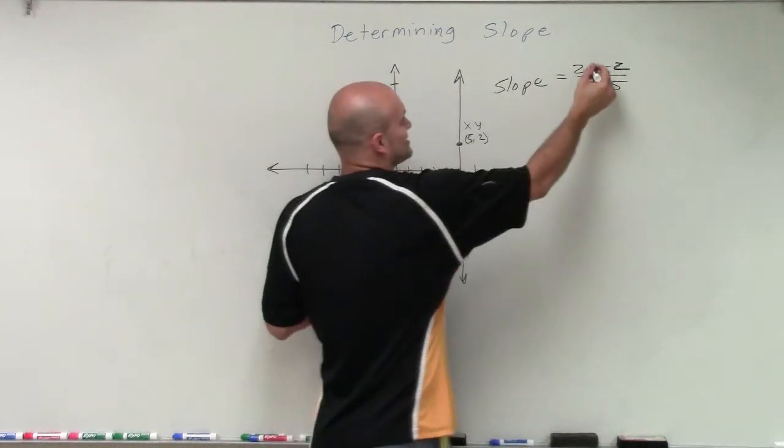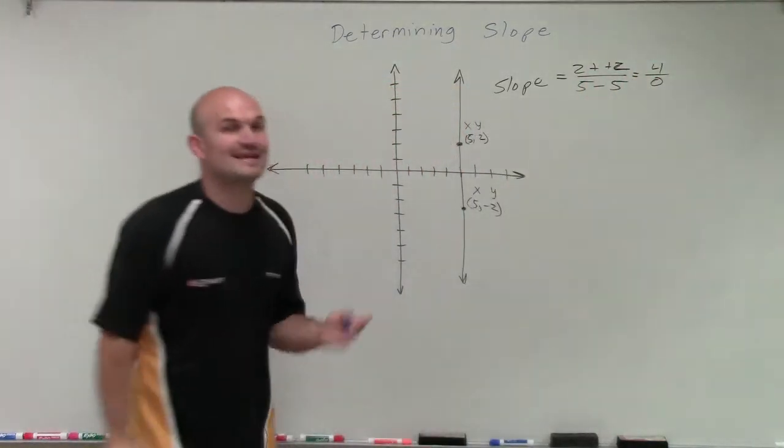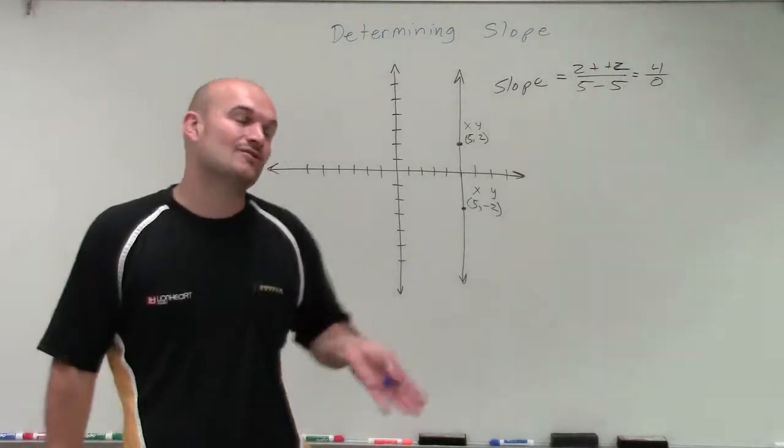And if I want to find the change, that's a double negative, which will become 4 over 0. And what I notice is, again, 4 divided by 0 is going to be undefined.